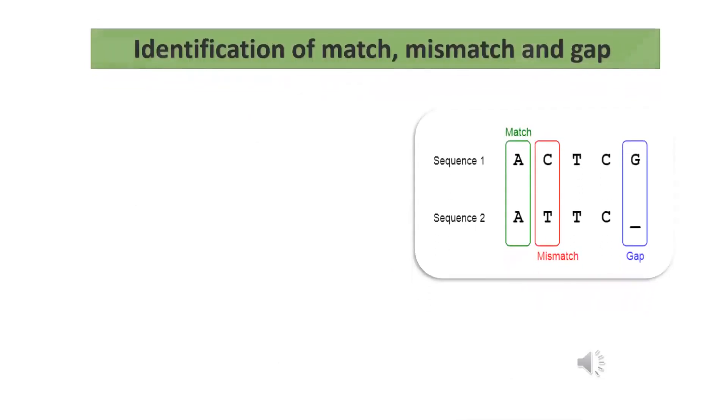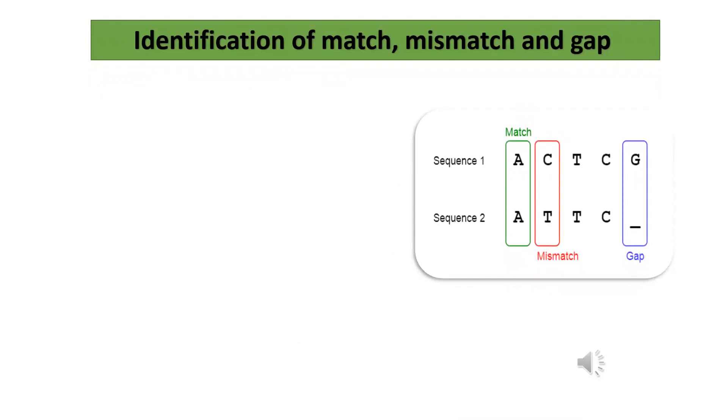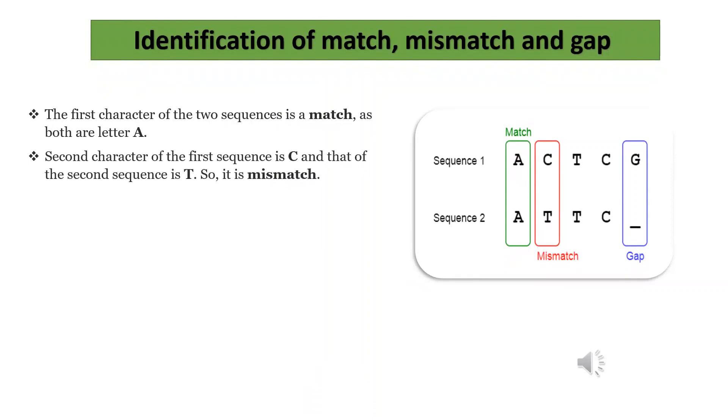Then, we can see how to identify match, mismatch and possible gap. See the following diagram. The first character of the two sequences is a match, as both are letter A. Second character of the first sequence is C and that of the second sequence is T. So, it is mismatch. A space is introduced at the end of the second sequence to match with G. This space is known as a gap.